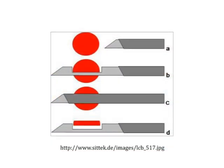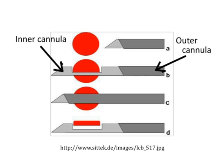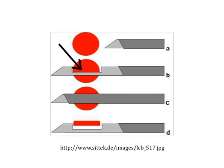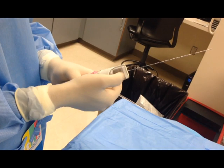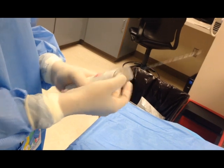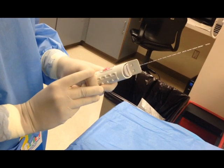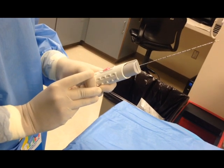The key piece of equipment for this procedure is the cutting biopsy needle. It's made of an outer cannula with an inner stylet that contains a specimen notch. The tissue fills the specimen notch and is then cut by the outer cannula when the device is fired.